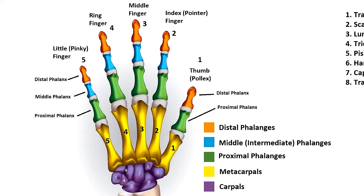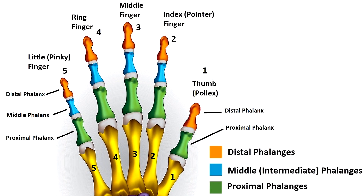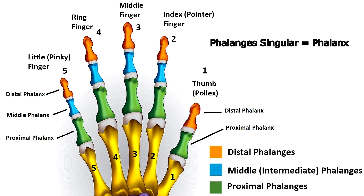Then you have digit number two, three, four, and five, ending with the little finger. Each finger is made up of three long bones called phalanges, except for the thumb which has only two phalanges. Your toe bones are also called phalanges, by the way.